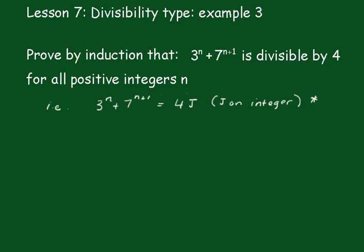Lesson 7, Divisibility type, Example 3. We have to prove by induction that 3 to the n plus 7 to the n plus 1 is divisible by 4 for all positive integers n.